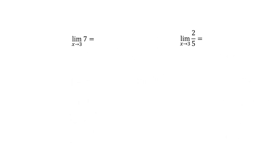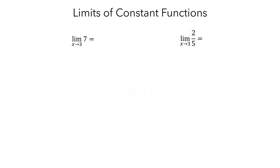Let's begin by looking at these first two limits. In the limit on the left, the constant function is the function that is always 7 for any value of x. And on the right, the constant function is the function that is 2 fifths for any value of x. A limit law for constant functions states that the limit as x approaches a of a constant c is the value of the constant c. Note that for all of our limits, the value of a is 3. For the first limit, the value of the constant function is 7, so the limit is equal to 7. For the second limit, the value of the constant function is 2 fifths, so the limit is 2 fifths.